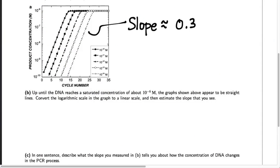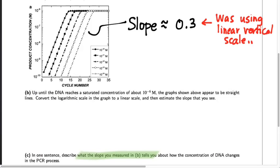Now that we know the lines on this graph have a slope of about 0.3, it's time to figure out what that actually tells us about how the concentration of DNA changes in the PCR process. The interesting part is that we measured a slope as though both scales were linear, when in fact one of our scales really is logarithmic — the scale measuring DNA concentration. So we have to be careful: that 0.3 we think of as an addition in the vertical direction is not an addition to the concentration of DNA, but an addition to the exponent of the DNA concentration. That's an important distinction.